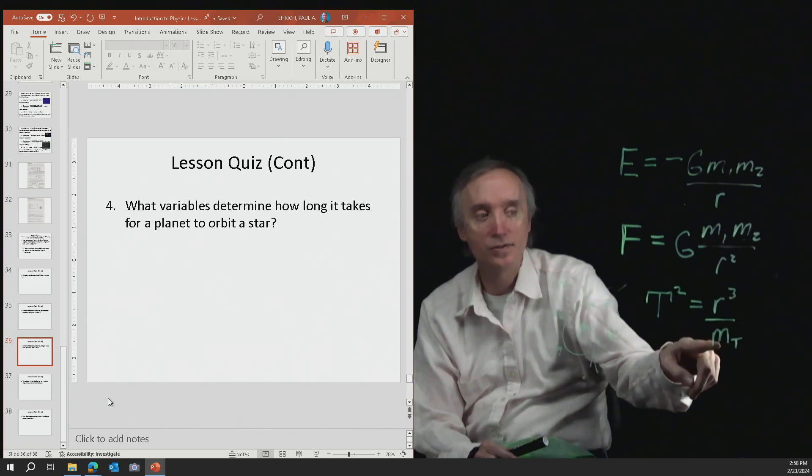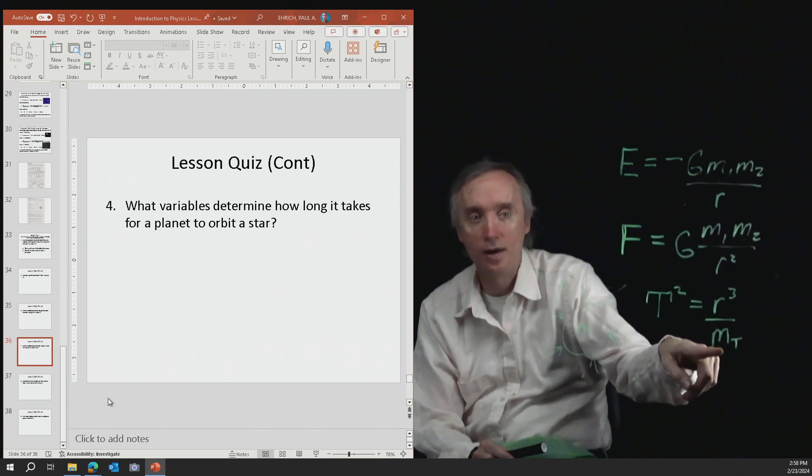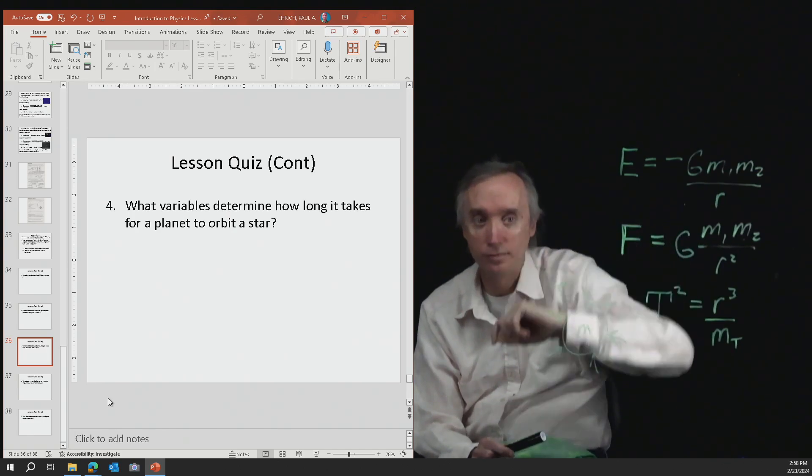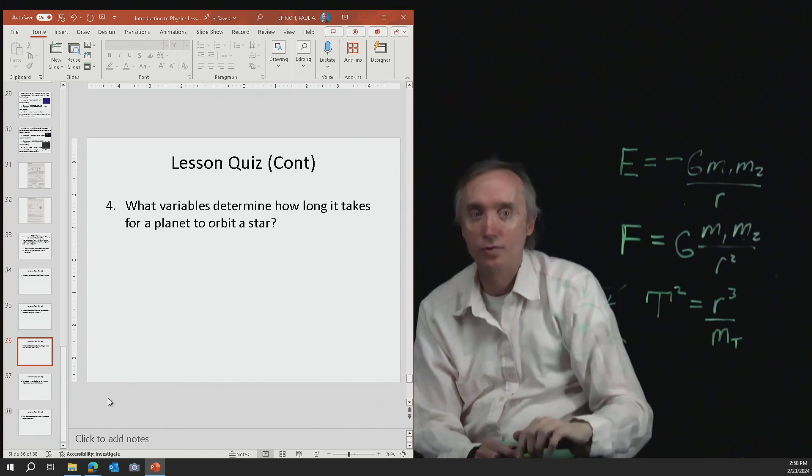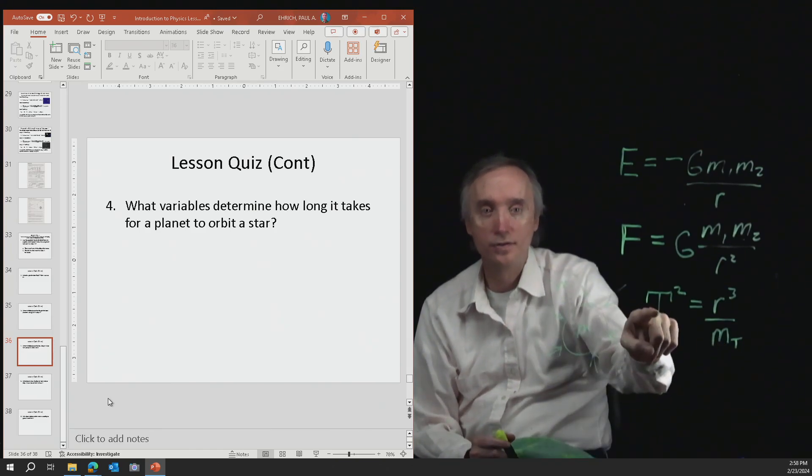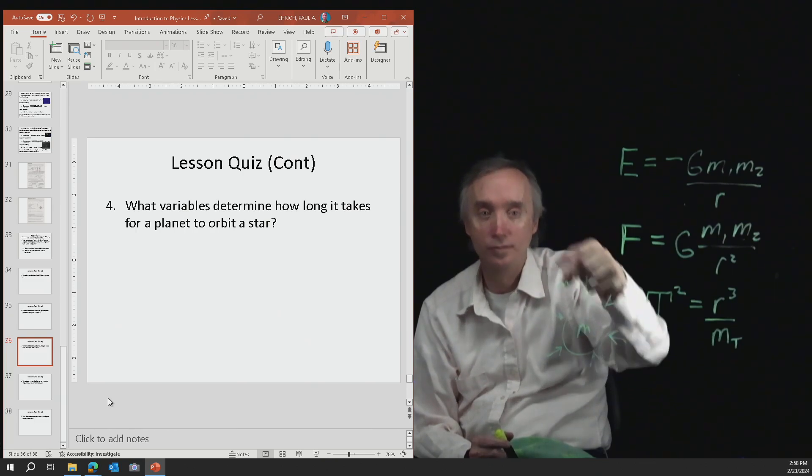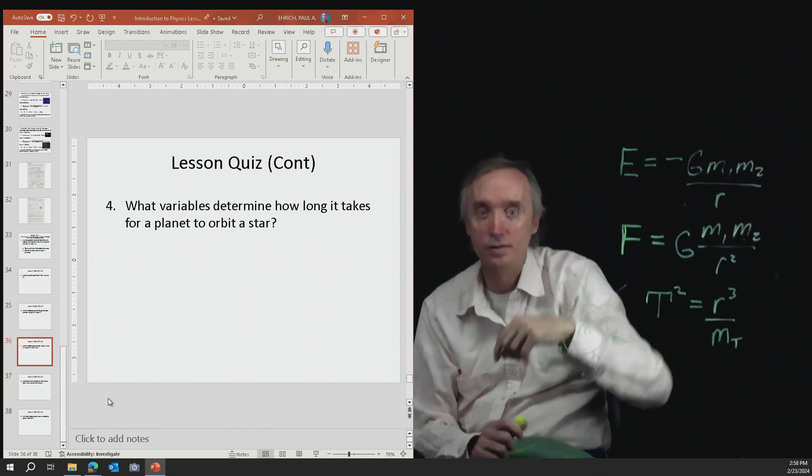So it would depend on the mass of the star plus the mass of the thing that is going around. So when you add those two together, that's the total mass. So those would be the variables that determine the time, the period that it takes to orbit.